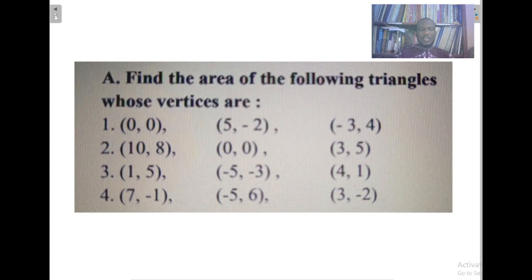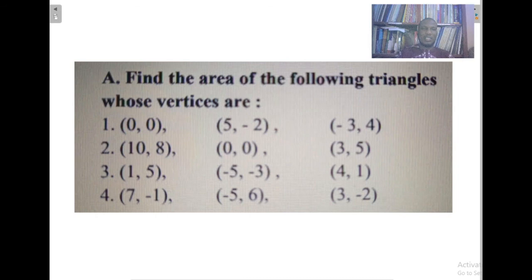Remember, we started the lesson by recalling the formulas we know for calculating the area of a triangle when we know the lengths of the sides. We spoke about the case where the base and perpendicular height are given — use the formula one half times base times perpendicular height. We also said when all three sides are given without the height or any angle, we use the formula: square root of s·(s minus a)·(s minus b)·(s minus c), where s equals (a plus b plus c) divided by 2.